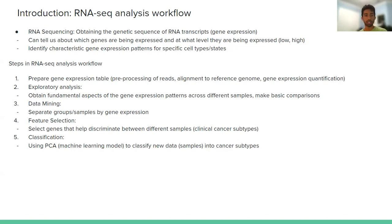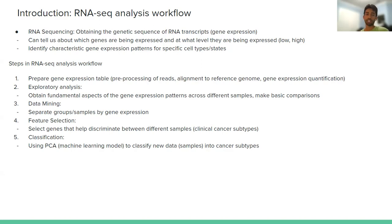Once the reads are cleaned up and ready to go, we do alignment to a reference genome. This basically tells you where the transcript sequence is coming from in the genome, what genes it corresponds to, and you can also see what type of variants exist — where the sequence is not completely similar to the reference genome and there are certain changes in the DNA bases. After alignment, we can get the gene expression quantification, which tells us what genes are being expressed and at what levels.